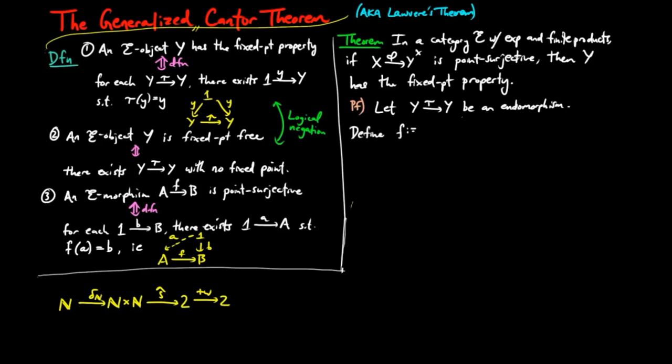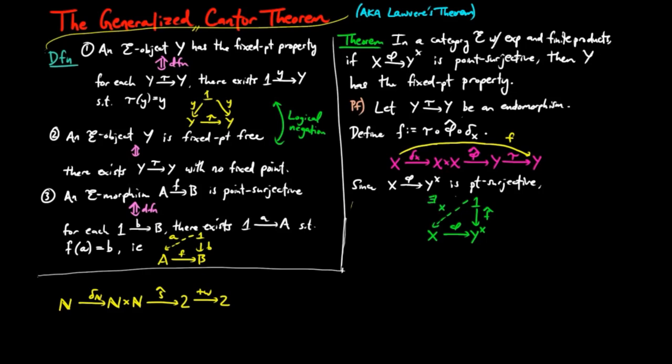Analogously, we define a morphism f as tau phi hat delta sub x, where delta sub x is the diagonal morphism on x, and phi hat is exponential adjoint of phi. Since phi is point surjective, there exists some little x in x, such that phi x is equal to f hat, where f hat picks out that morphism f in the exponential object.